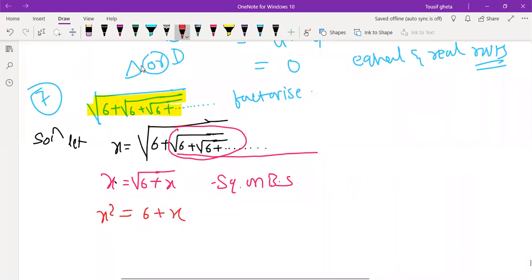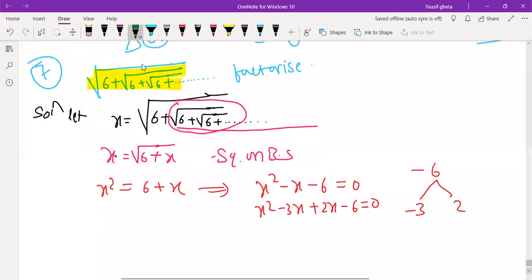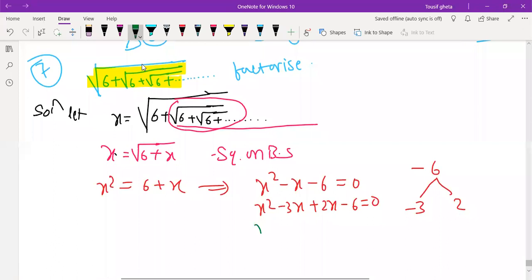Now we can write this as x square minus x minus 6 equals to 0. Factorize 6 as 3 times 2. So you will get x square minus 3x plus 2x minus 6 equals to 0. x of x minus 3 plus 2 of x minus 3 equals to 0.